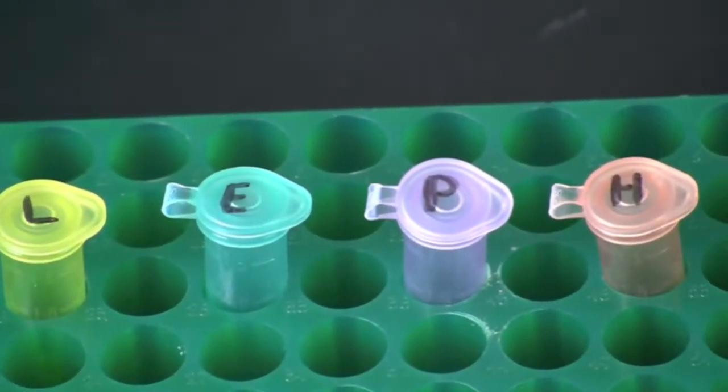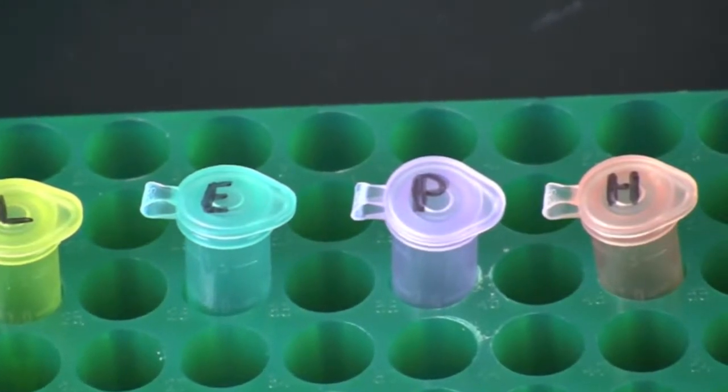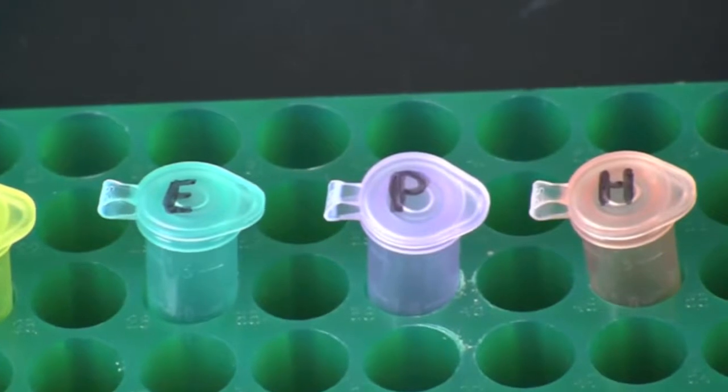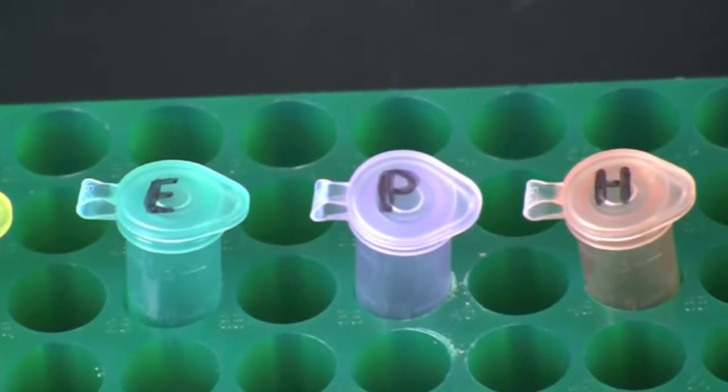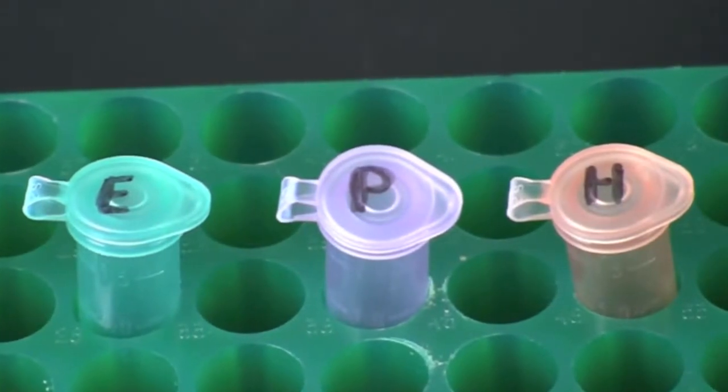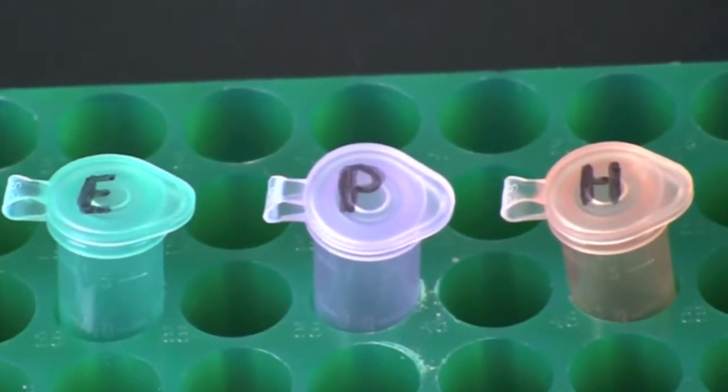Label four color-coded microcentrifuge tubes with L for lambda DNA, E for ECO-R1, P for PST1, and H for HINDI-3. Label all of the tubes with your initials and date, and place them in a microcentrifuge tube rack.